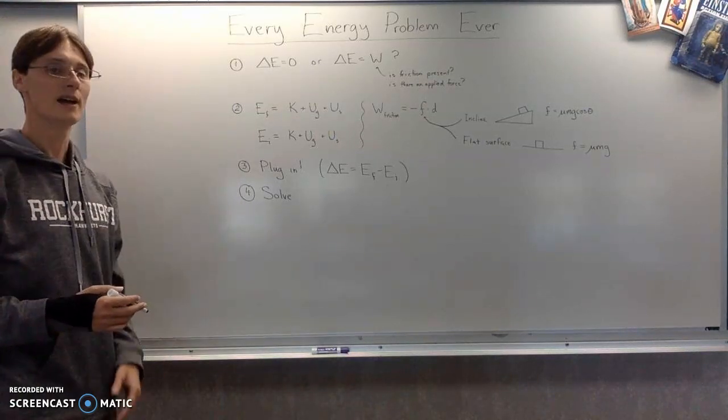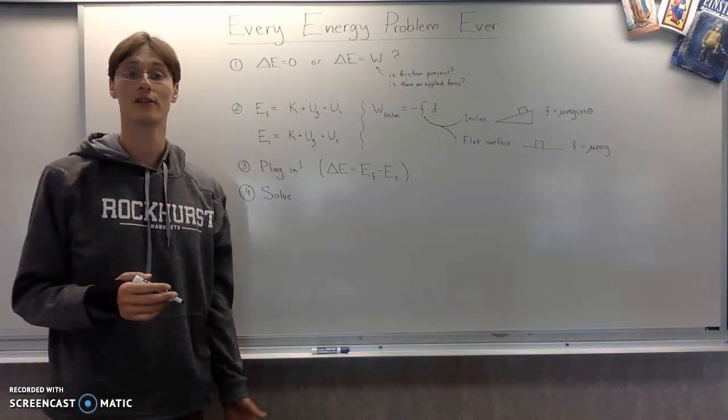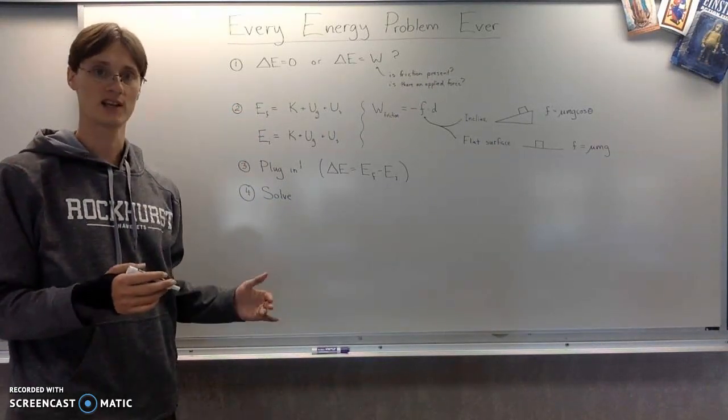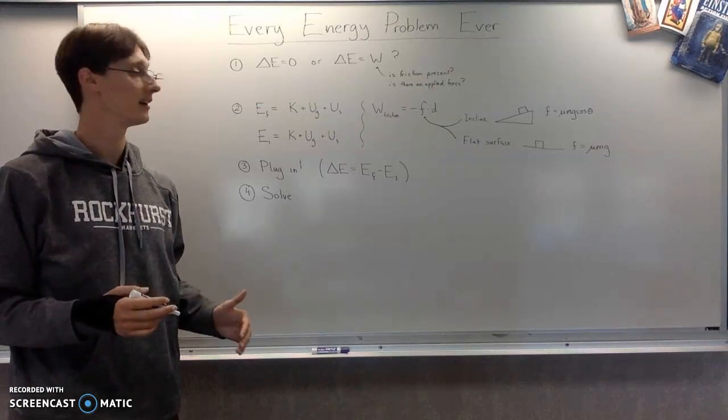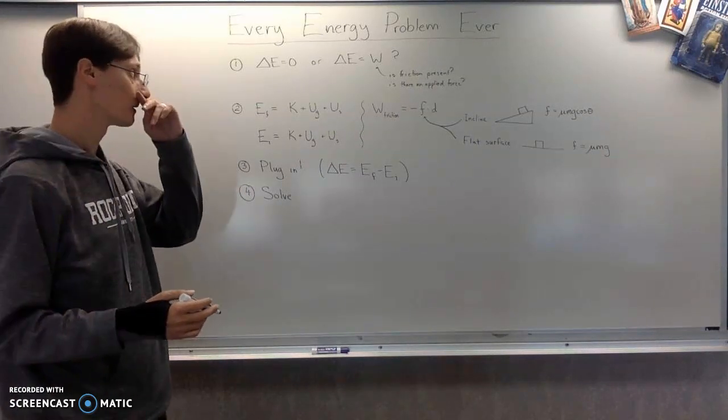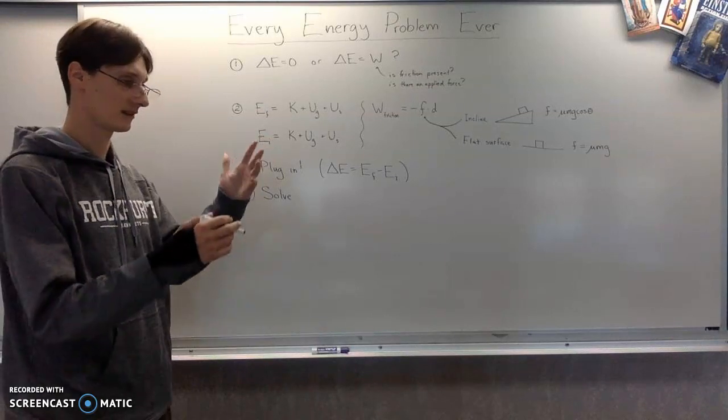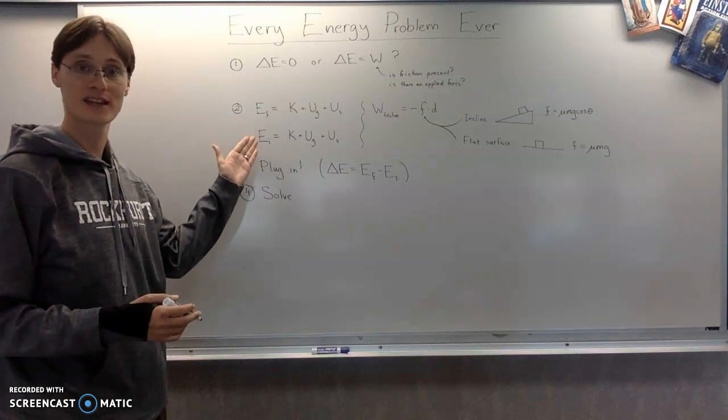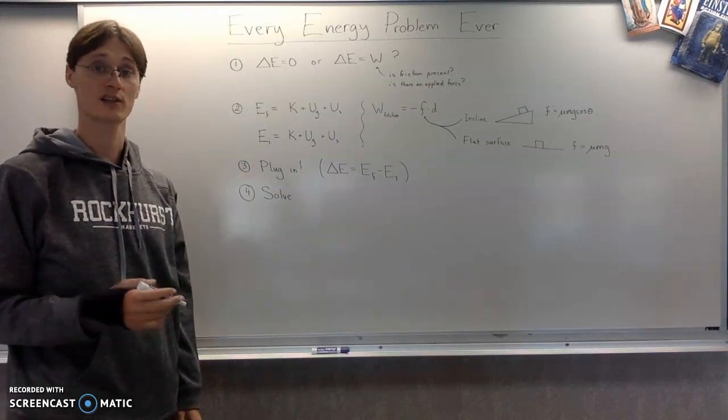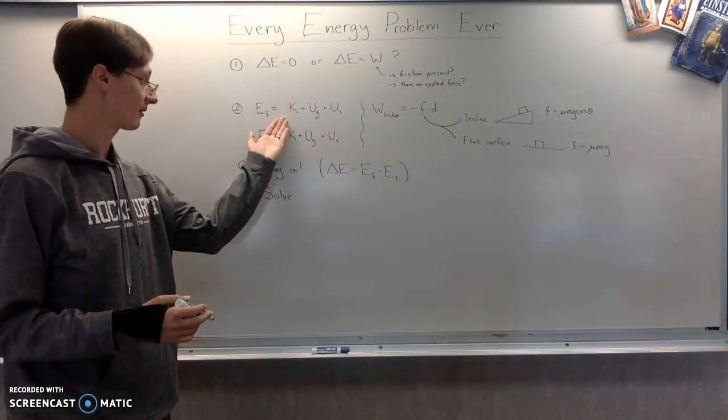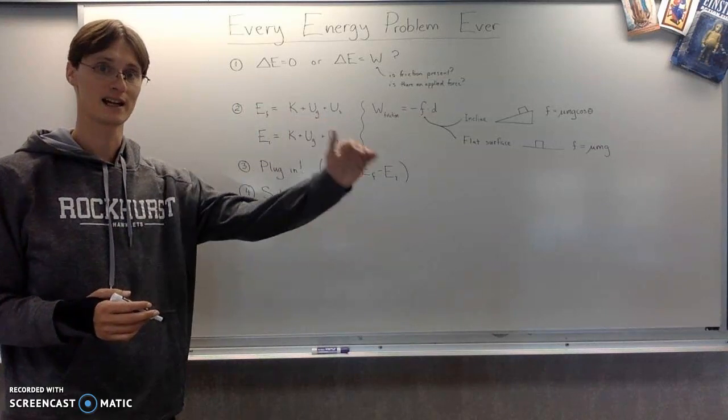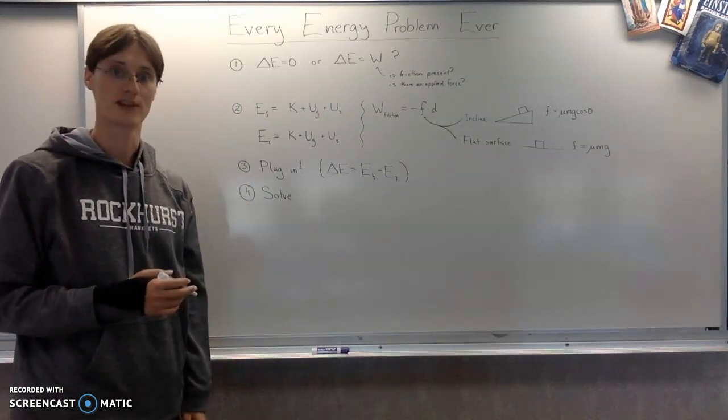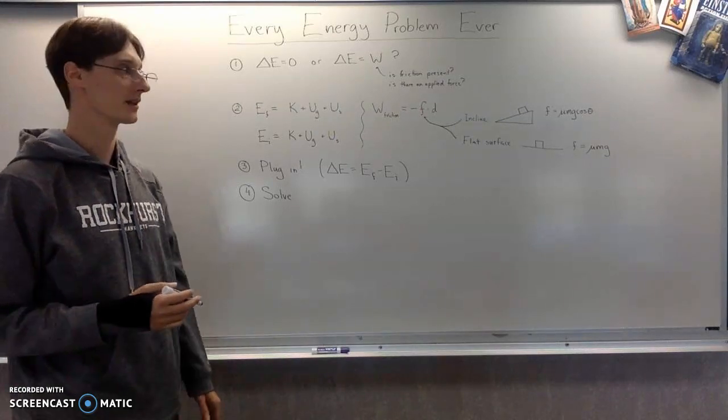Step two, you have to decide what kinds of energy are present at each of the two moments or positions, however you want to think about that, in order to decide whatever you're trying to work out. Okay, so you have to list out the things that are present at each of those positions. If it helps, you can write out the three kinds that we've learned about, and then cross off the ones that aren't present.